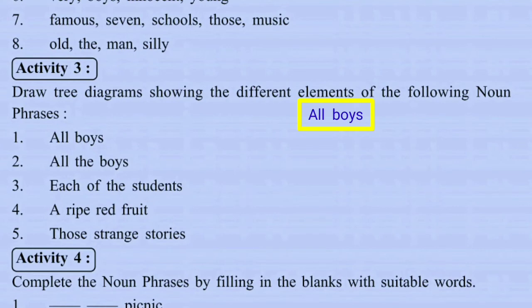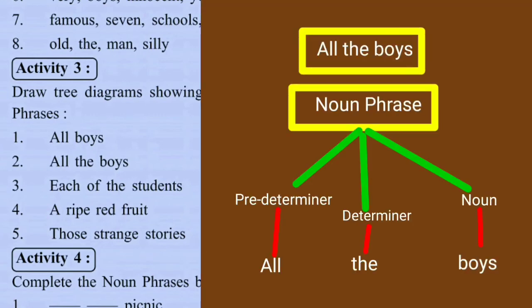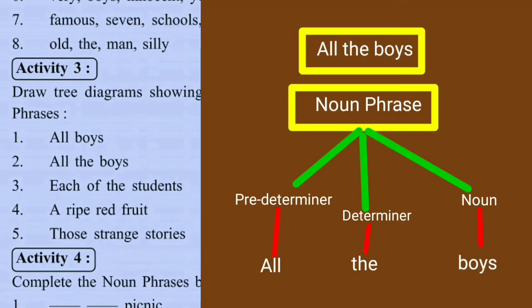In 'all boys', 'all' is a determiner of distributives and 'boy' is the head noun. In 'all the boys', 'all' is a pre-determiner, 'the' is a determiner (article), and 'boys' is the head noun. In 'each of the students', 'each' is a pre-determiner, 'the' is a determiner (article), and 'students' is the head noun.